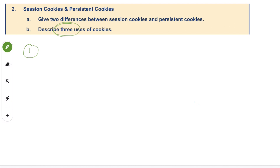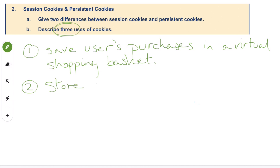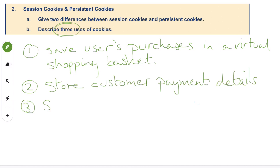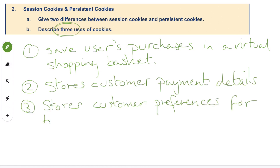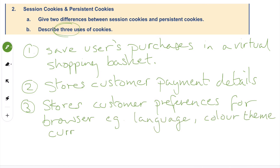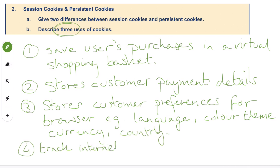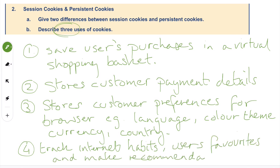We also need to describe three uses of cookies. First, they save users' purchases into a virtual shopping basket. Second, they store customer payment details. Third, they store customers' preferences for browsers — such as language, colour theme, currency, and country. Additionally, cookies track internet habits, record user favourites, and make recommendations by pushing targeted advertising and products towards the user.